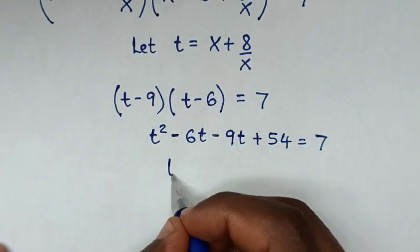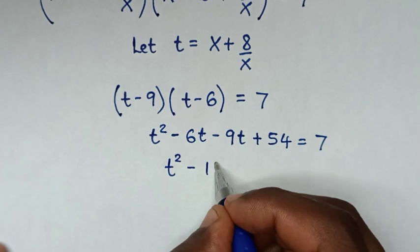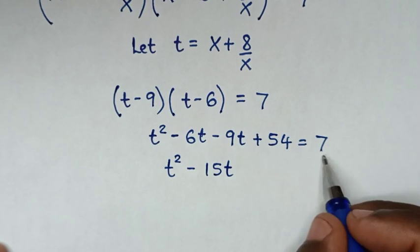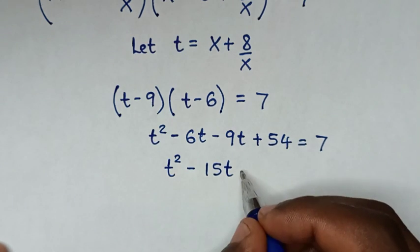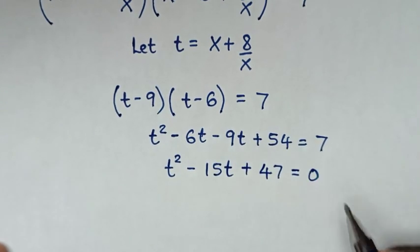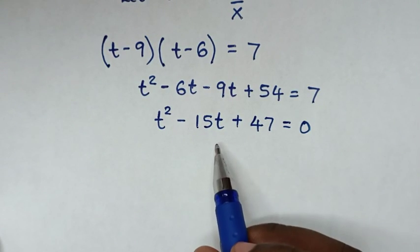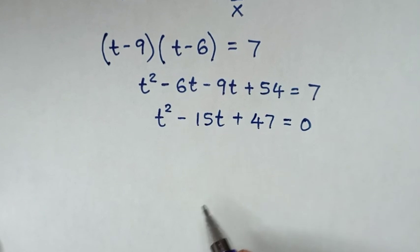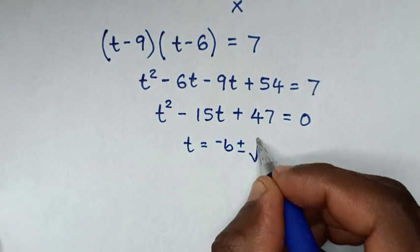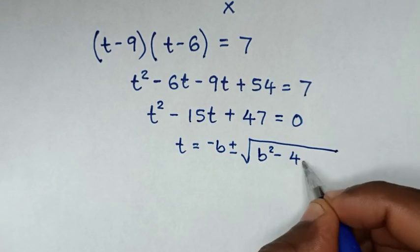Then we take 7 to the left side: t squared minus 15t plus 54 minus 7 equals 0, which gives t squared minus 15t plus 47 equals 0. Then from this quadratic equation, we will solve it by the quadratic formula, where t equals negative b plus or minus square root of b squared minus 4ac, all over 2a.